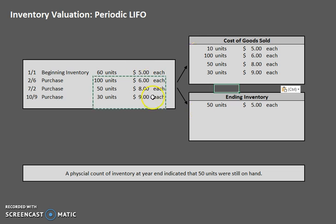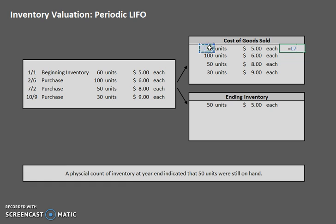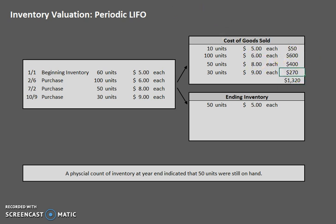We have the information we need to find our cost of goods sold and our ending inventory cost, so all we have to do is some math. Let's multiply each layer to find the total cost of each layer and then add them up to find the total cost of goods sold. Our total cost of goods sold is $1,320. Our total cost of ending inventory — we only have the one layer — is $250.